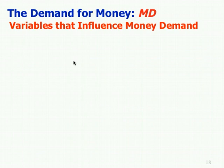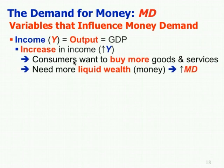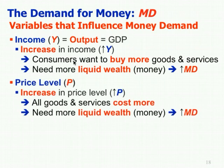What's going to influence money demand? One factor is income. In the economy overall, national income equals national output or GDP. If you have more income, you want to buy more goods and services, but buying more goods and services takes money — you need more liquid wealth, so that increases money demand. Price level also matters: if the price level goes up, all goods and services cost more, so even if you don't buy any more goods and services you need more money to buy the same goods and services, which also increases money demand independently.